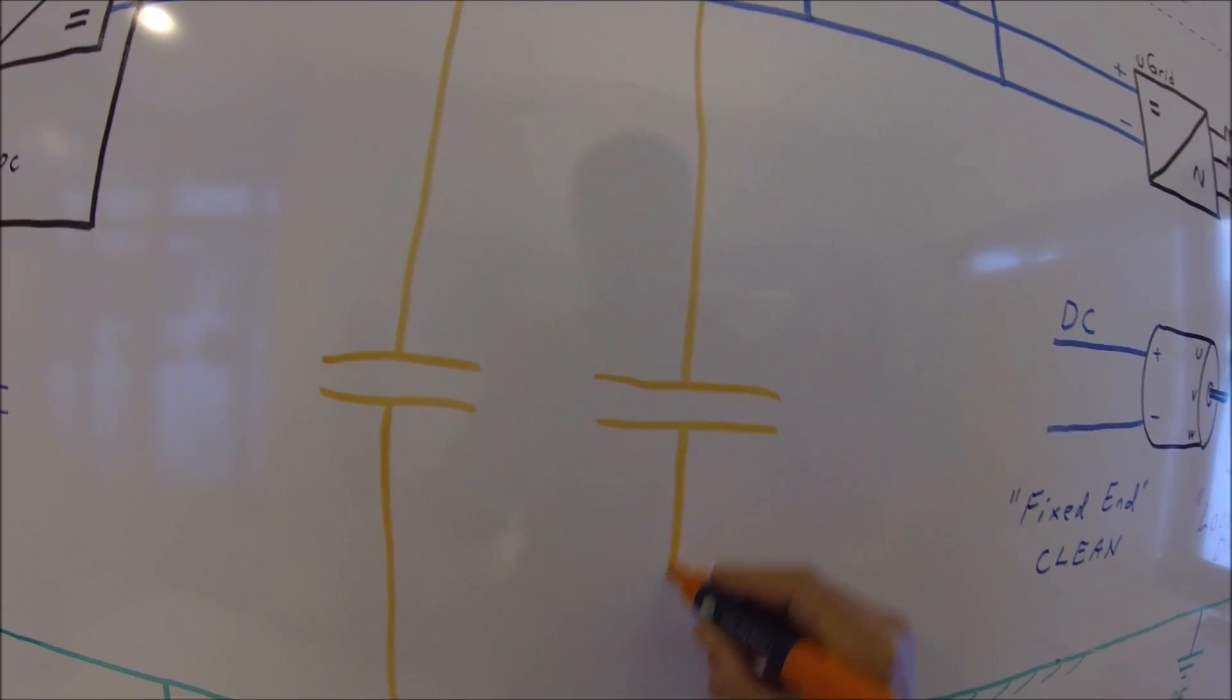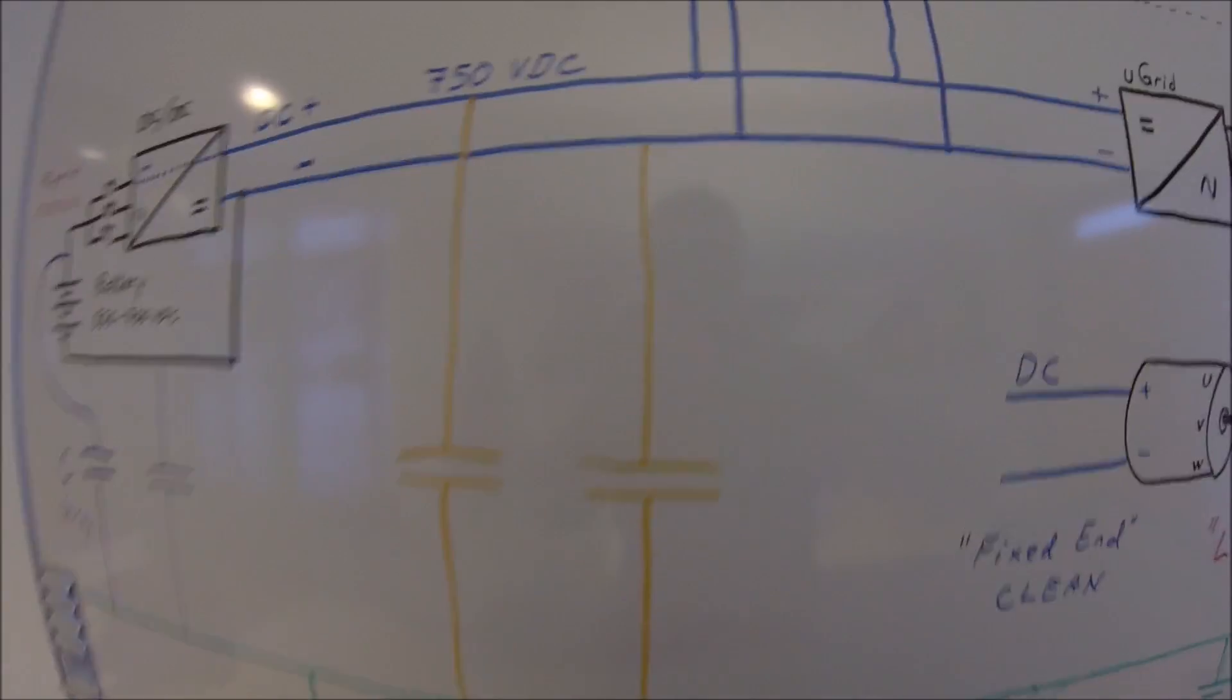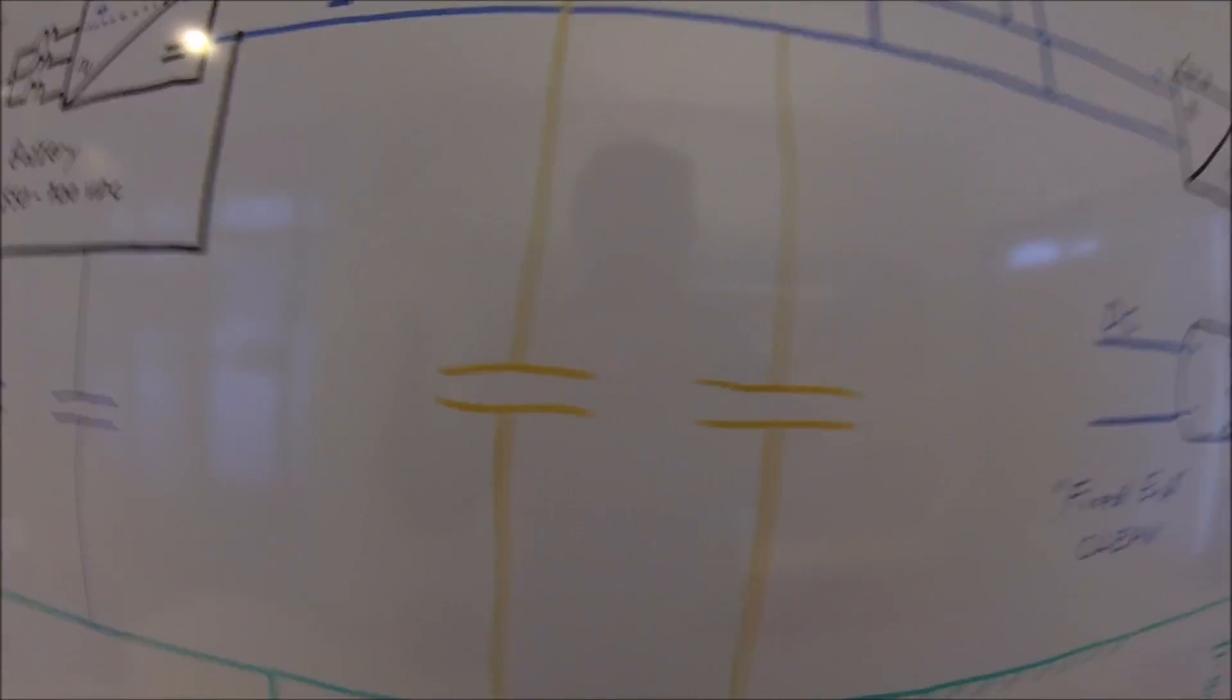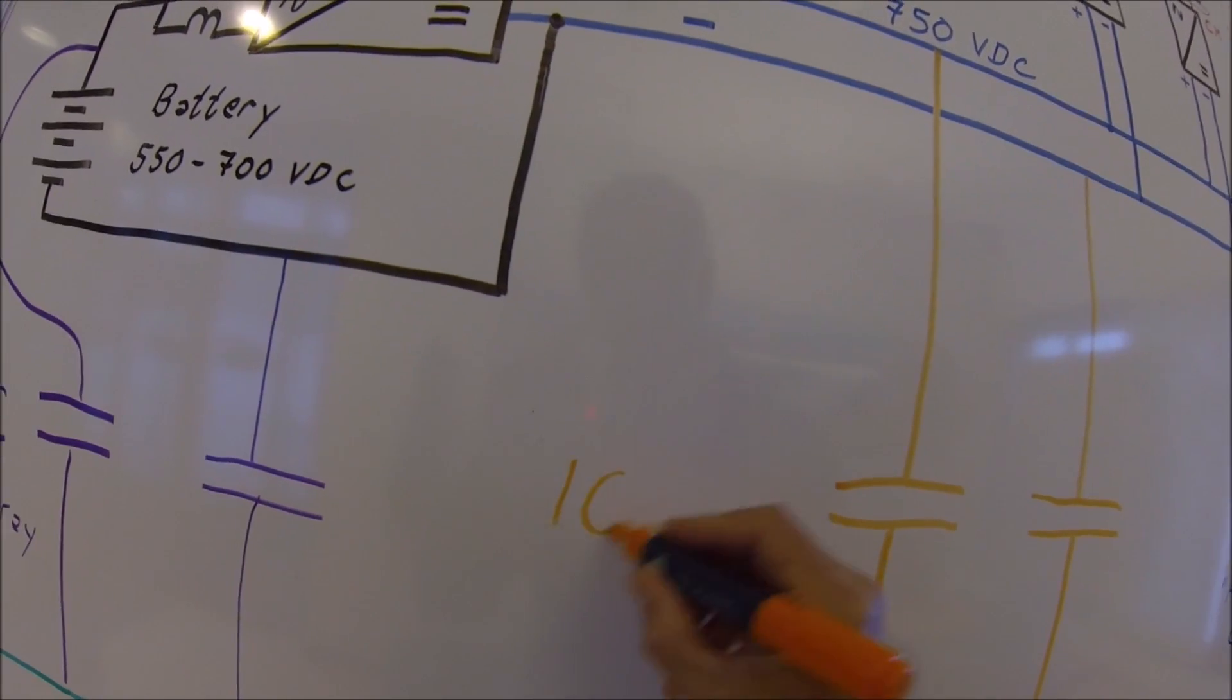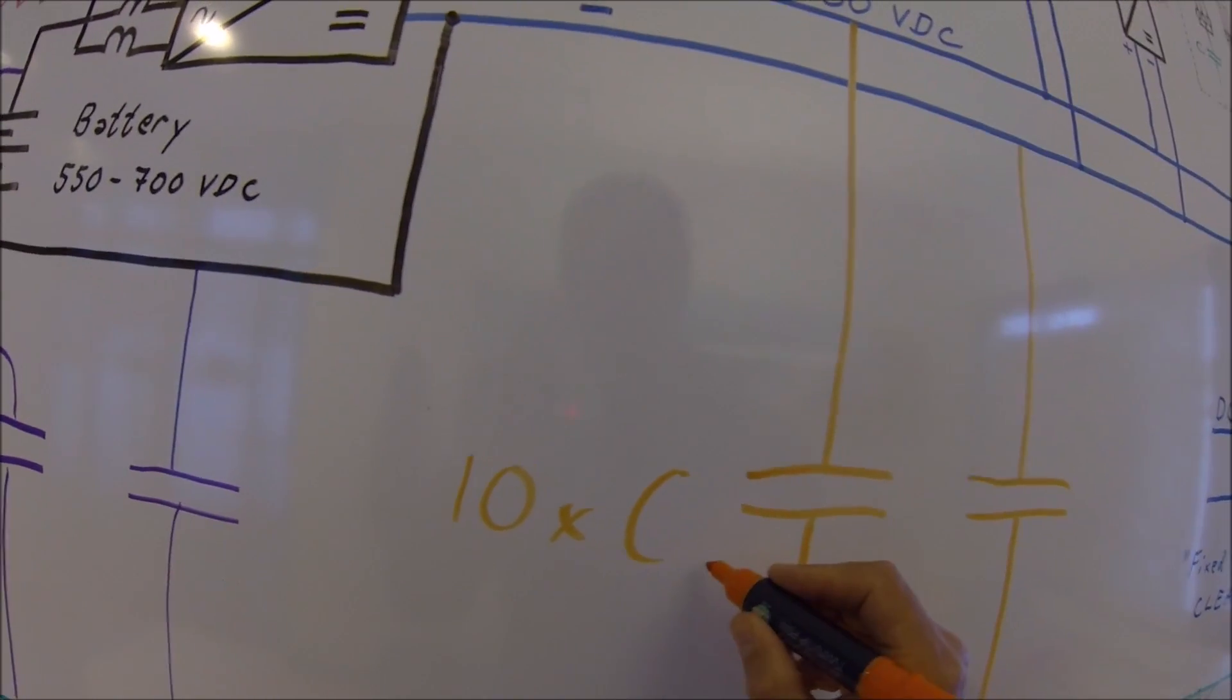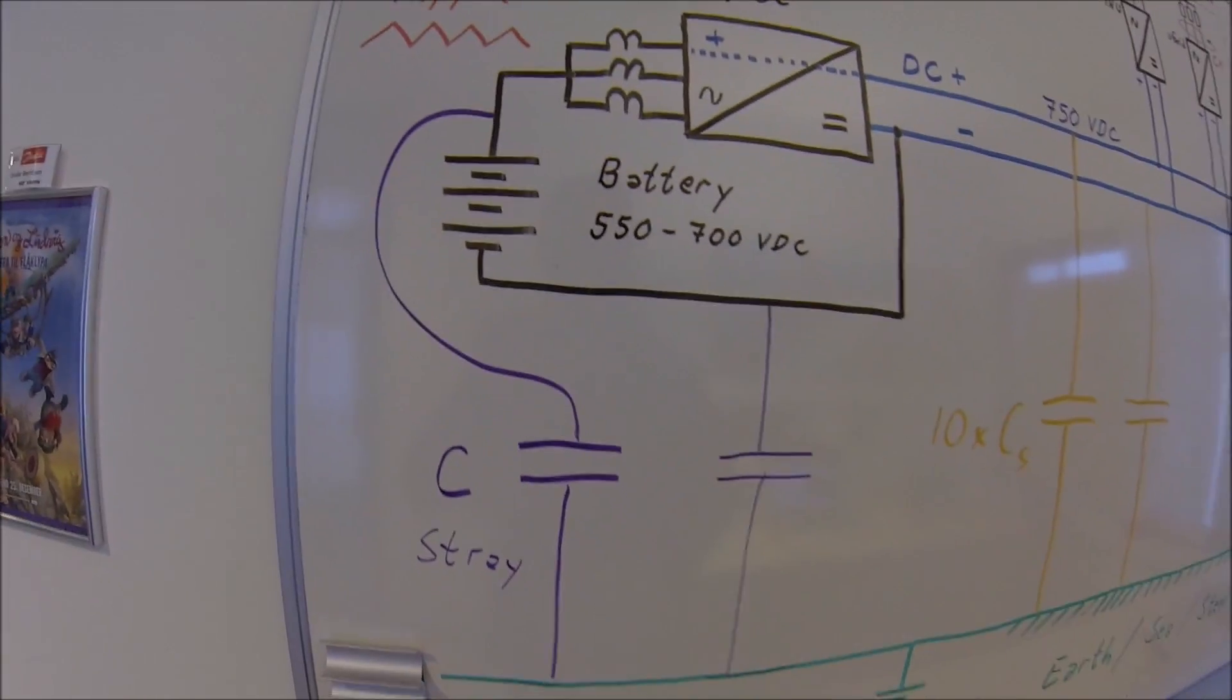And typically this is some kind 10 to 50 microfarad. The size of this capacitance should be almost 10 times the stray capacitance. So if you have a stray capacitance of one microfarad, this one should be 10 microfarad.